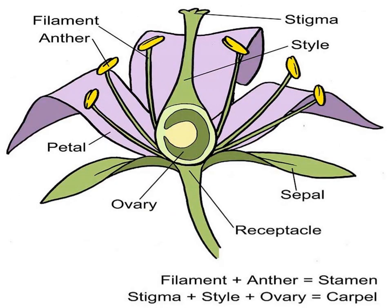The corolla is the second whorl of the floral leaves; it follows the calyx. It consists of a group of bright colored, scented leaves, and each leaf is called a petal. The corolla protects the reproductive organs and attracts insects to the flower, which helps in the reproduction process.